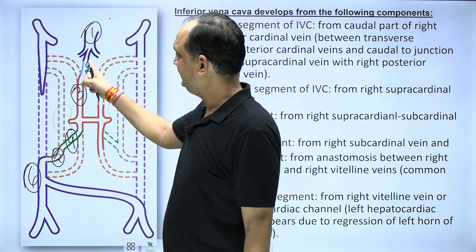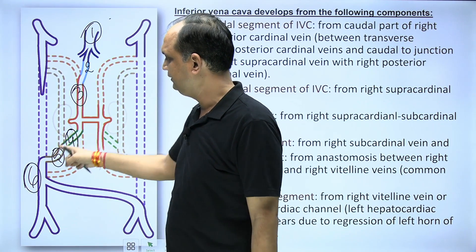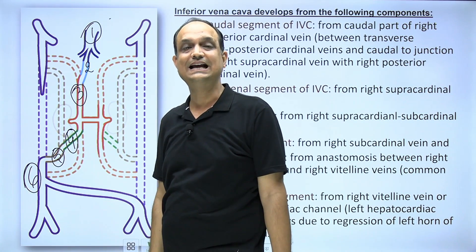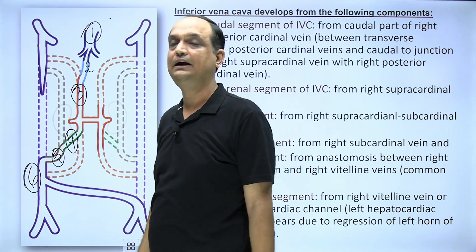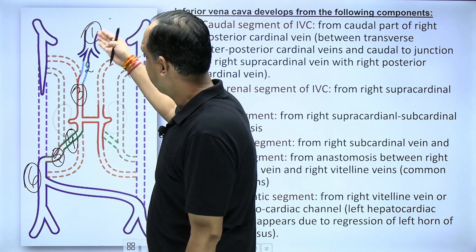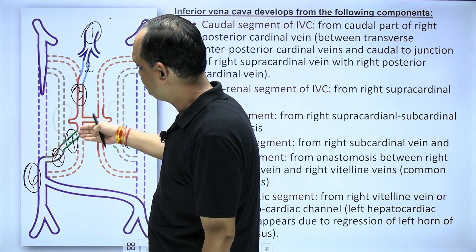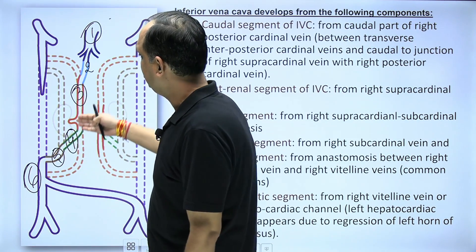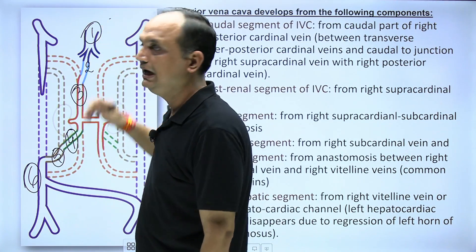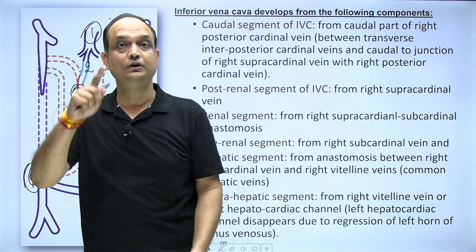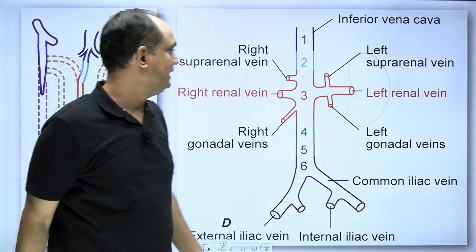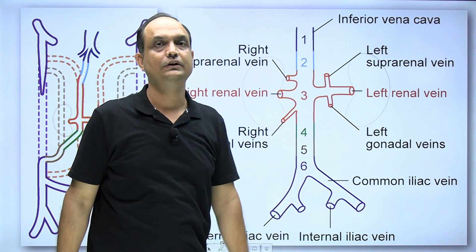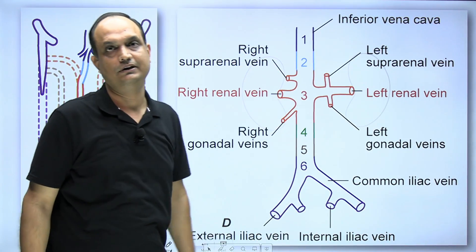In this way, the inferior vena cava develops in six segments that connect with each other, and when forming a straight tube, you have the adult form of inferior vena cava.